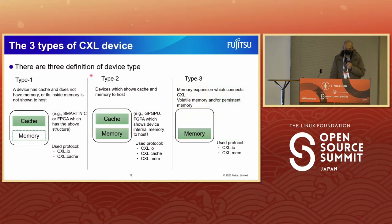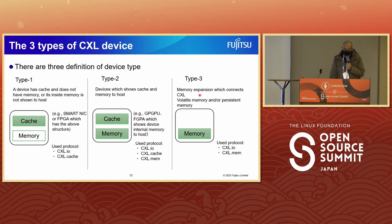There are three definitions of CXL device types. Type 1 has cache but does not show memory to the host — for example SmartNIC or FPGA — and uses CXL-IO and CXL-Cache protocols. Type 2 shows both cache and memory to the host; a good example is GPGPU or FPGA that exposes device internal memory. This type uses all three protocols: CXL-IO, CXL-Cache, and CXL-MEM. Type 3 is a memory expansion device connecting via CXL for volatile and/or persistent memory, using CXL-IO and CXL-MEM.